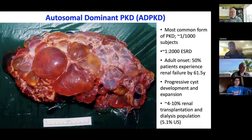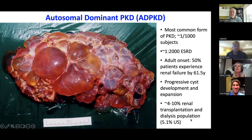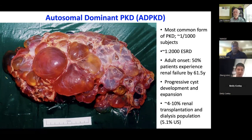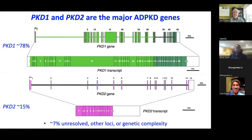Most of you are pretty familiar with ADPKD. This is a very common monogenic disease and a common cause of kidney failure — accounting for about 5% of individuals with renal failure in the U.S. It's a progressive disease that develops over the lifetime of the patient, with an average age of kidney failure around 60 years of age. PKD1, the most common gene, was identified about 30 years ago.